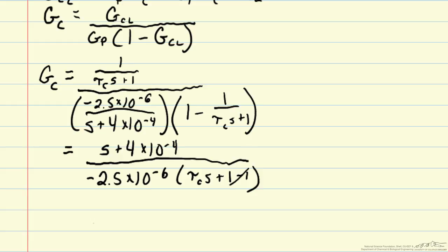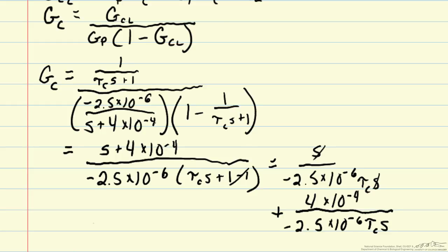So we can cancel those terms and get s divided by negative 2.5 times 10 to the minus 6 times tau c s. That's the first term and then we can cancel the s's. And then we get a second term and now we have this s in the denominator that isn't canceled by anything.